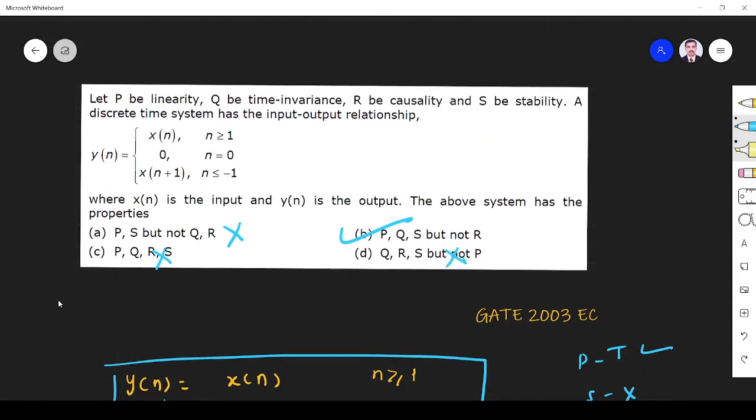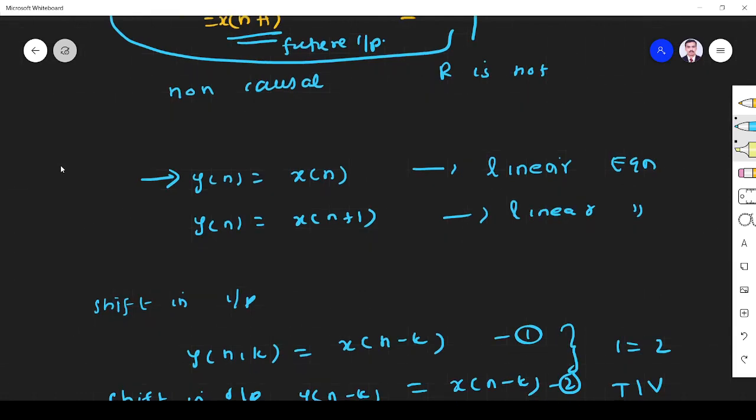What about stability? Whether it is stable or not? Already we found the answer, anyway we will check. You see y(n) equals x(n), so it is bounded. If this one is bounded, if you give 5, it will be 5 only. So this is bounded input. If you give x(n) equals 5, y(n) is also 5. So bounded input produces bounded output, so this is stable area.